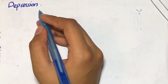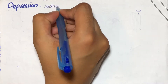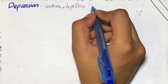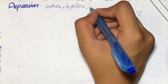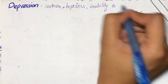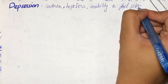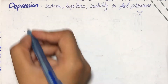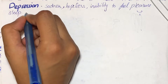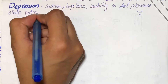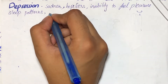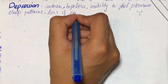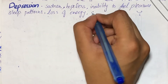Depression is actually a feeling of sadness and hopelessness. In this condition, the patient actually feels inability to experience any pleasure in any of his or her usual activities. He can also have disturbance in sleep cycle or sleep patterns. He also experiences loss of appetite or change in appetite behavior, and also feels loss of energy. And there can also be presence of some suicidal thoughts.